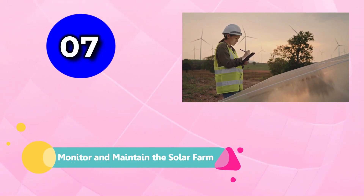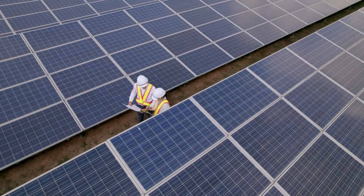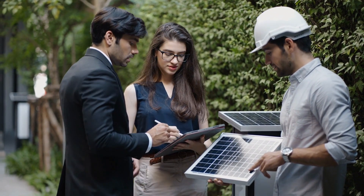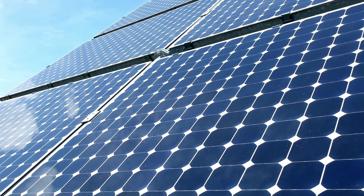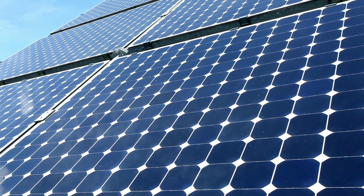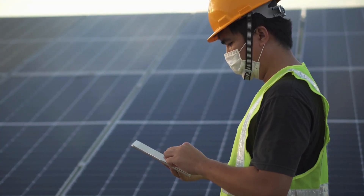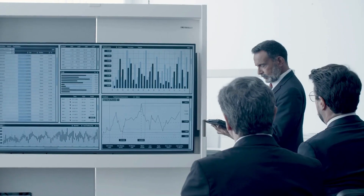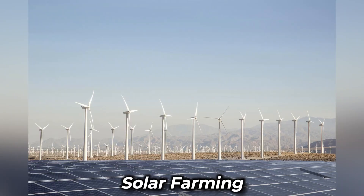Step 7: Monitor and Maintain the Solar Farm. Once your solar farm is up and running, it is important to monitor its performance and maintenance regularly. This includes monitoring energy production, performing routine maintenance on the solar panels and electrical system, and tracking financial performance. Regular monitoring and maintenance can help ensure that the solar farm continues to operate at peak performance and maintain its financial viability over time. Additionally, it can help identify and address potential issues before they become major problems.